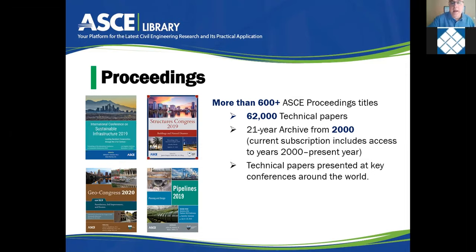Proceedings — it's more than 600 titles and your library subscribes to all of them. You have access to everything. It's a 21-year archive — proceedings from the year 2000 up to the present year.